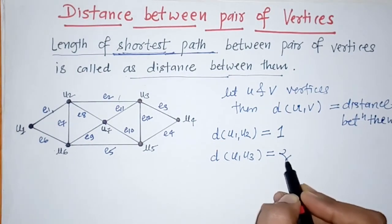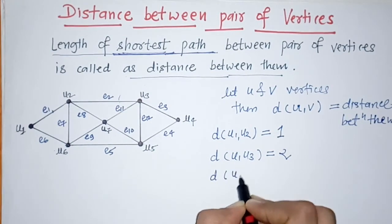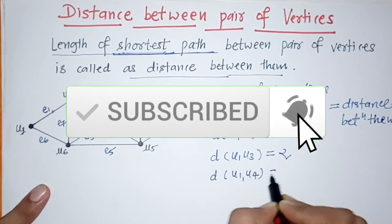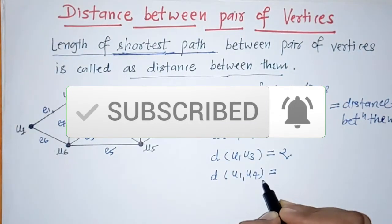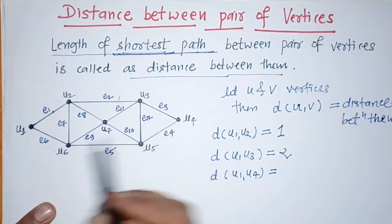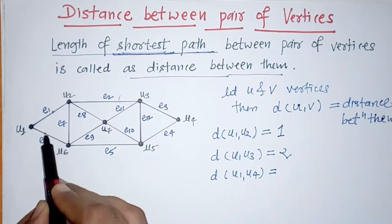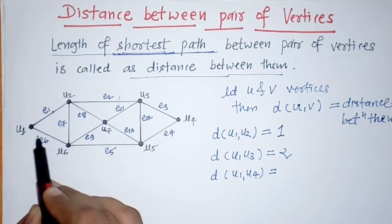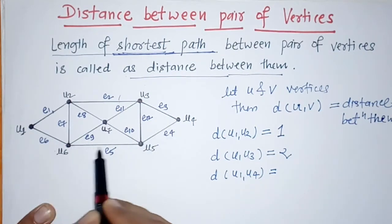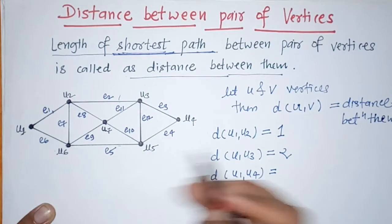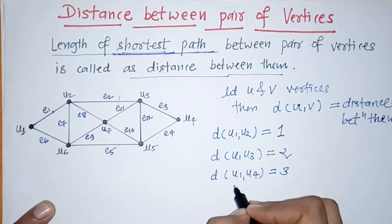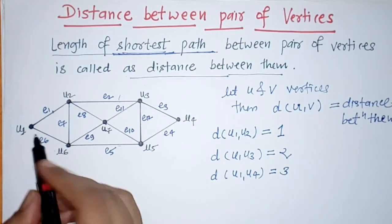For distance between u1 and u4, we need the shortest path. We can check that the shortest path goes via vertices u6, u5, and u4. This path includes 3 edges, so the distance between u1 and u4 is 3.